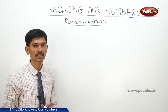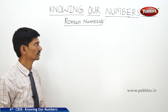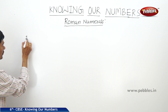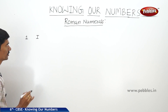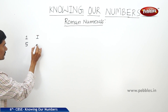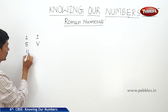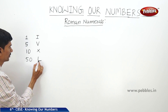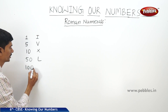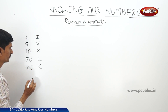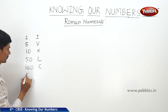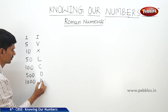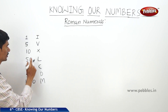We use some symbols for representing particular Hindu-Arabic numerals. In the first column we take Hindu-Arabic numerals and in the second column we take Roman numerals. To represent 1 we use I, for 5 we use V, for 10 we use X, for 50 we use L, for 100 we use C, for 500 we use D, and for 1000 we use M.